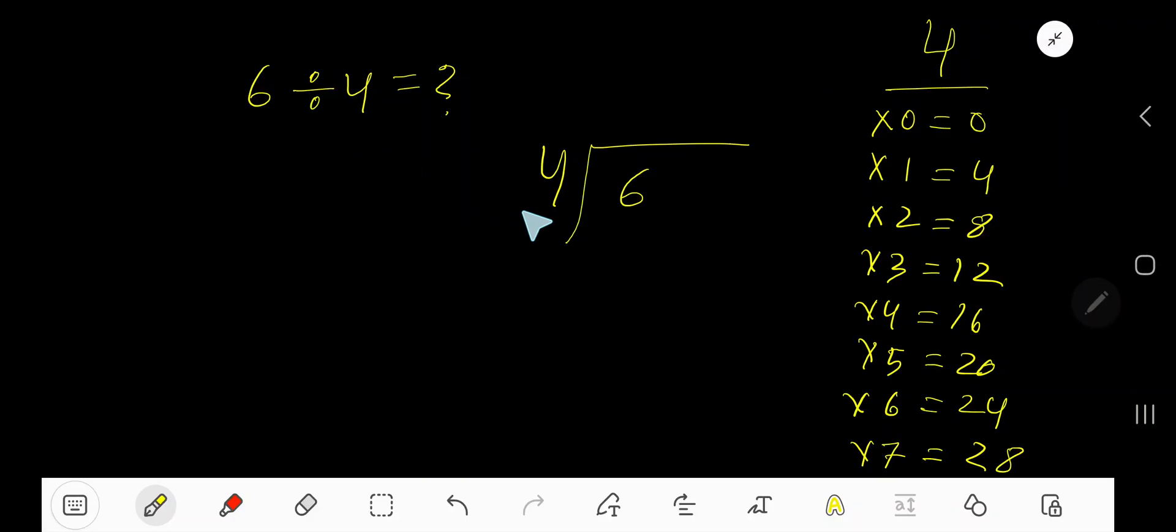6 divided by 4. Here 4 is the divisor, so we need the multiplication table of 4. 4 times 0 is 0, 4 times 1 is 4, 4 times 2 is 8, 4 times 3 is 12, 4 times 4 is 16, 4 times 5 is 20.